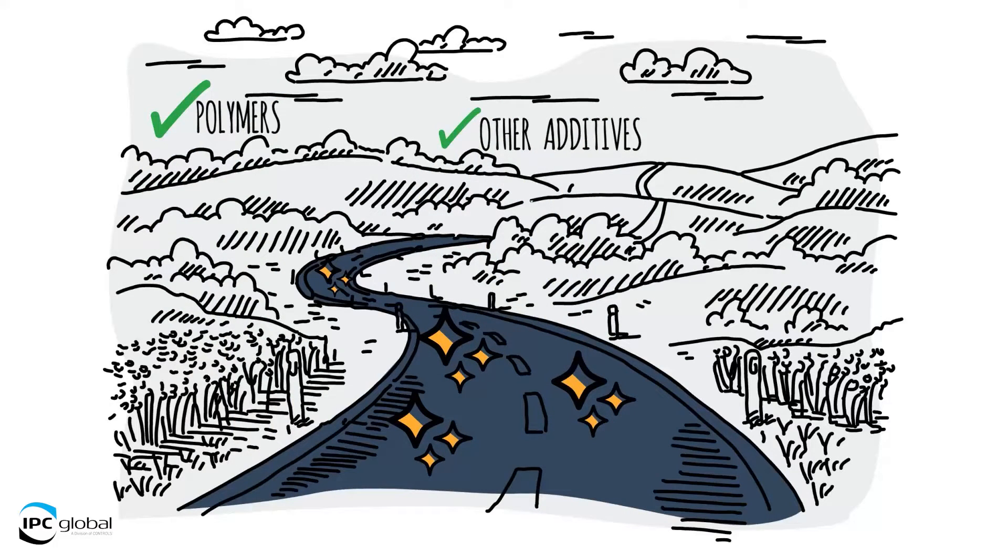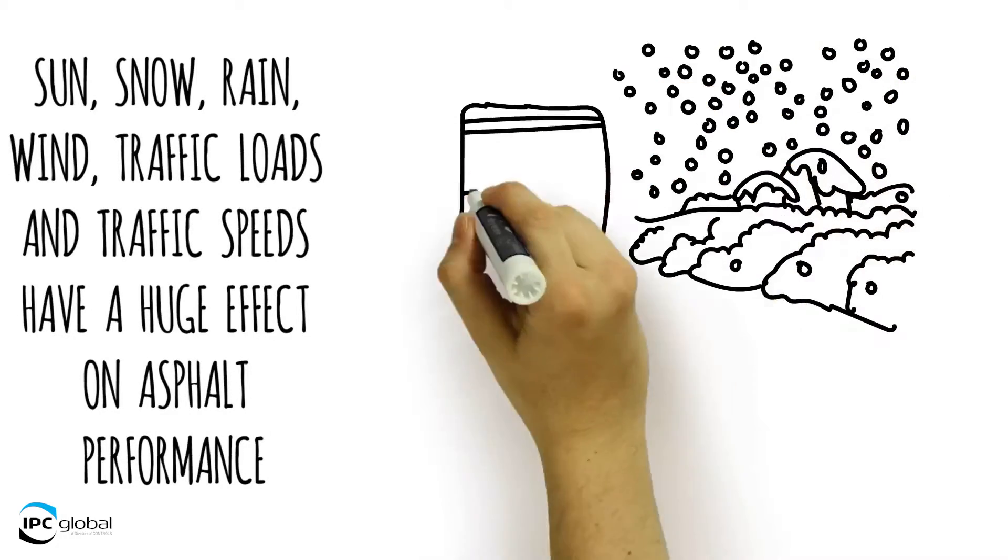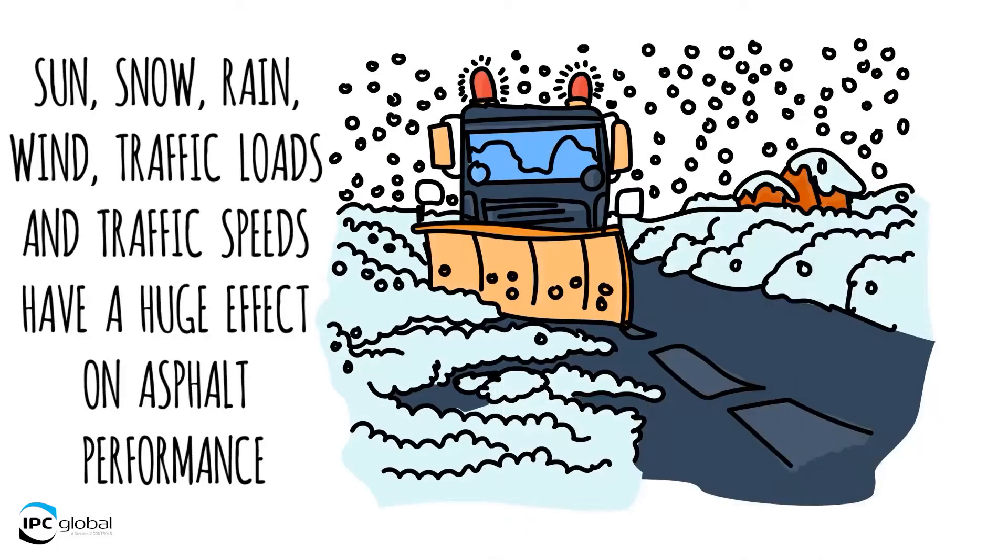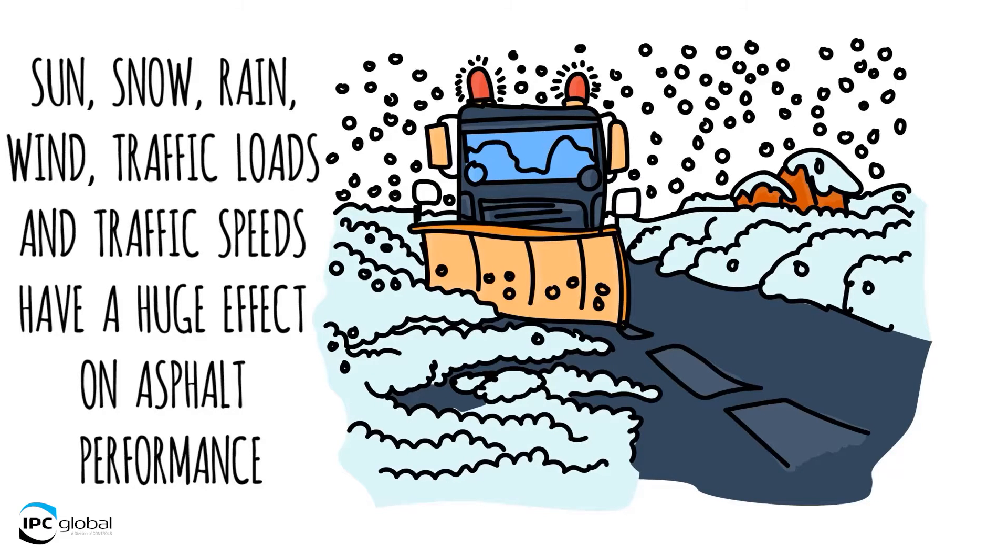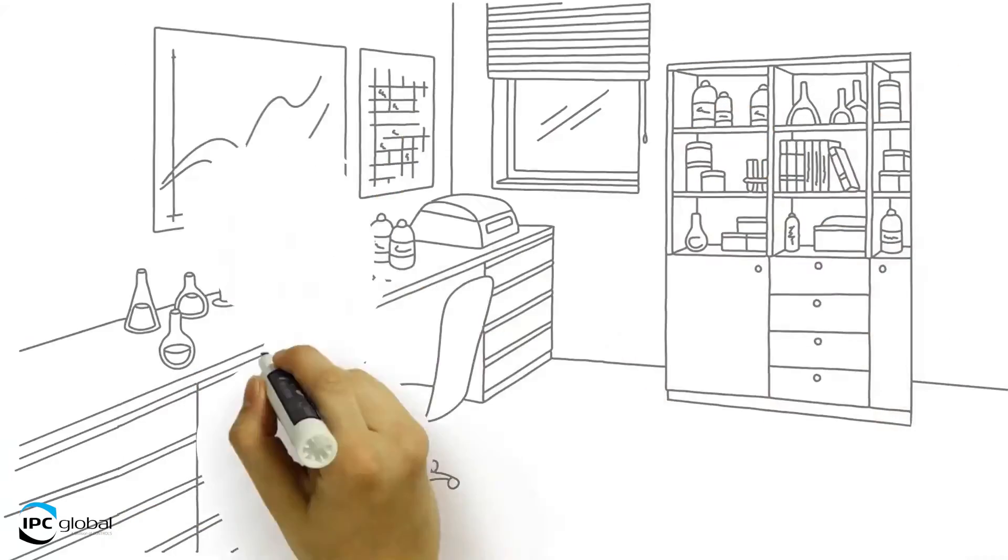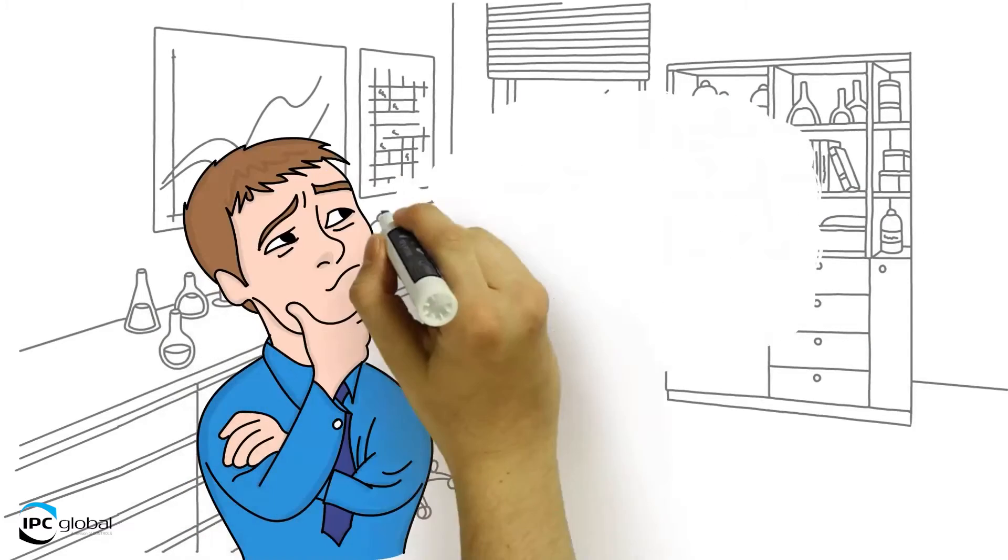Environmental conditions such as sun, snow, rain, wind, traffic loads, and traffic speeds have a huge effect on asphalt performance. Old methods don't take this into account. Asphalt mixtures are viscoelastic, and their properties are affected by temperature and speed of loading.